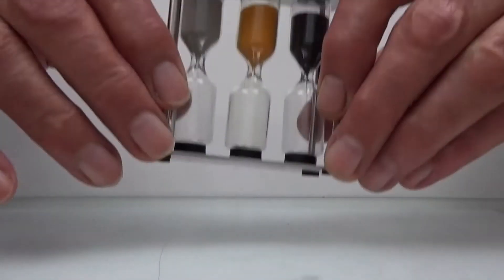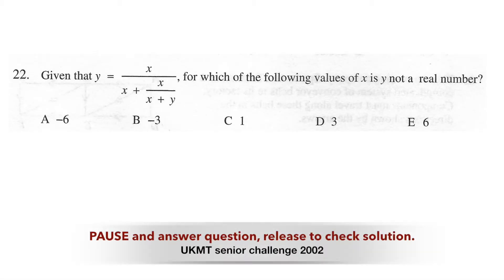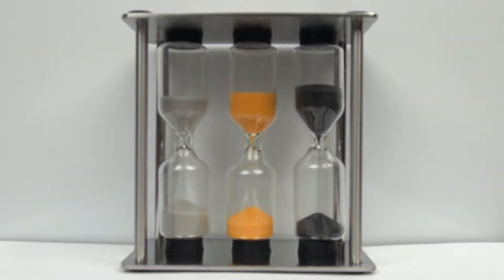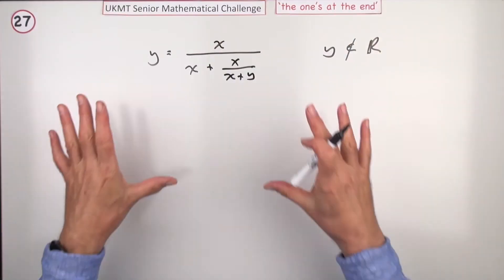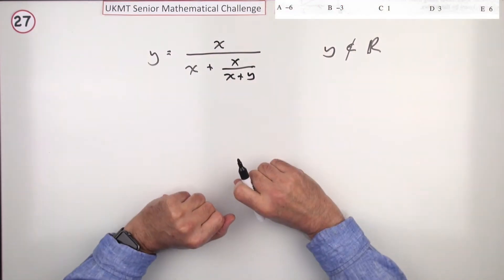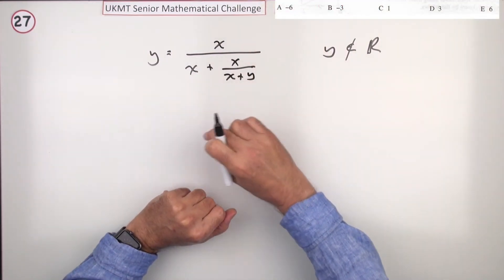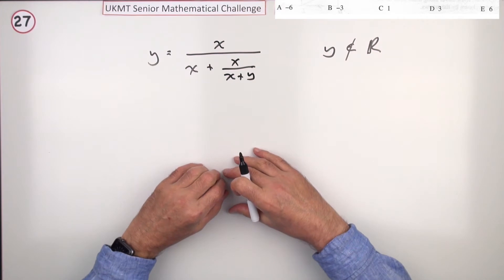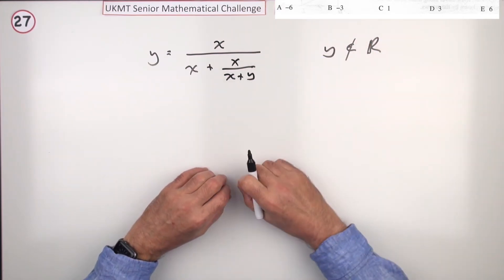So, ready, and go. In this one here, you've got this little equation here, and it says, well, values of x is y not a real number. But you've just got this selection of 5 here.